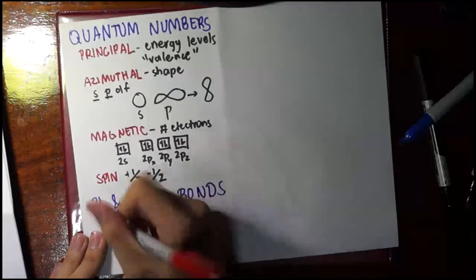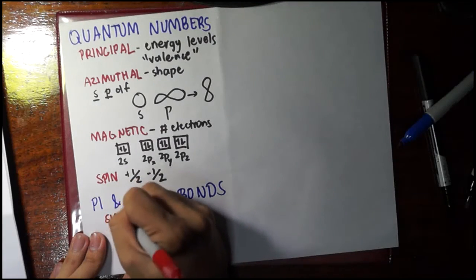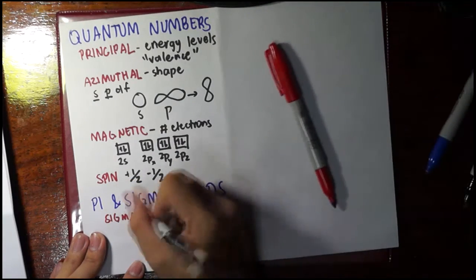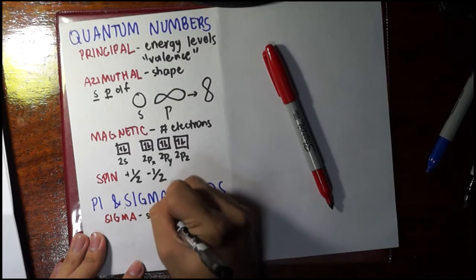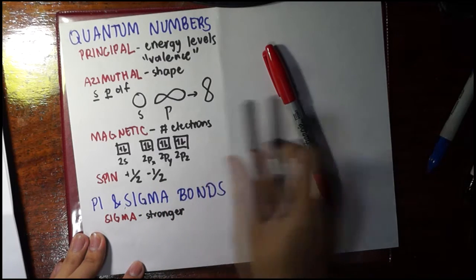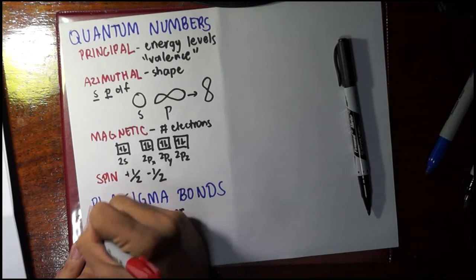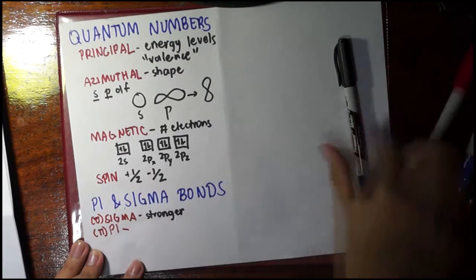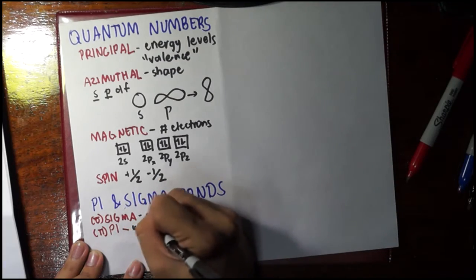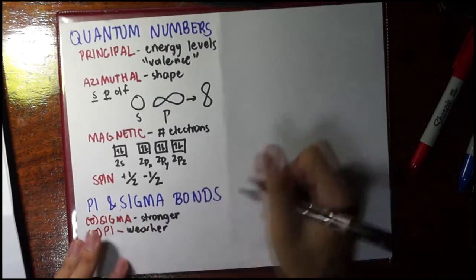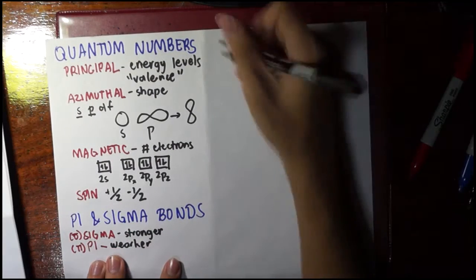So as a general description that we always use, the sigma bond is supposed to be stronger, whereas the pi bond is supposed to be weaker. Let's try to rationalize why.